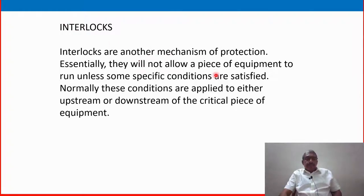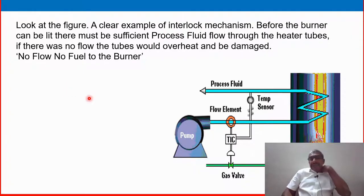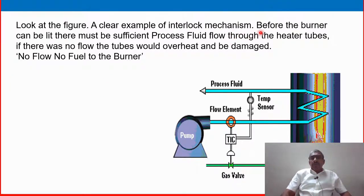Next is interlocks. Interlocks are another mechanism of protection. They will not allow a piece of equipment to run unless some specific conditions are satisfied. Normally, these conditions are applied to either upstream or downstream of the critical piece of equipment. A clear example of the interlock mechanism: before the burner can be lit, there must be sufficient process fluid flow through the heater tubes. If there was no flow, the tubes would overheat and be damaged.